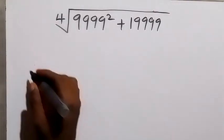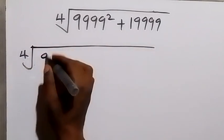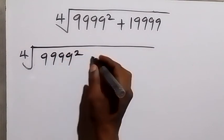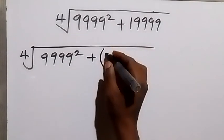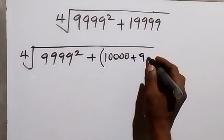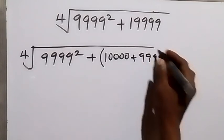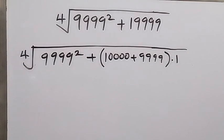We have the fourth root of 9999 squared, then plus — let's rewrite 19999 as 10,000 plus 9,999. From there we discover that this is the same thing as multiplying by one, so if we multiply by one it will still be the same: 10,000 plus 9,999.